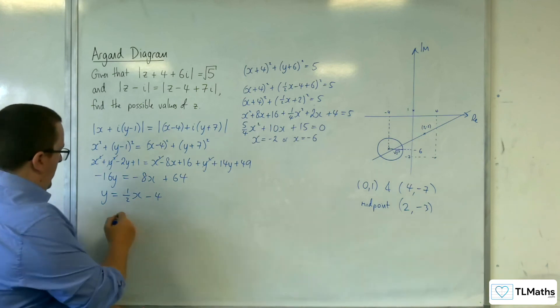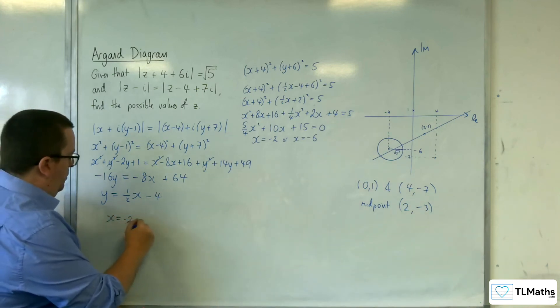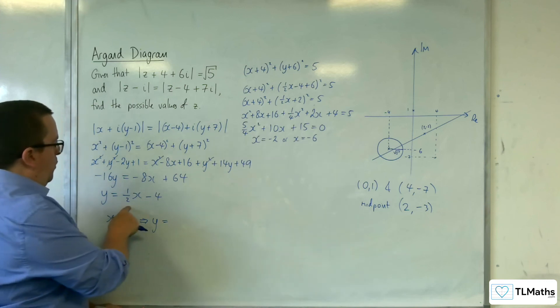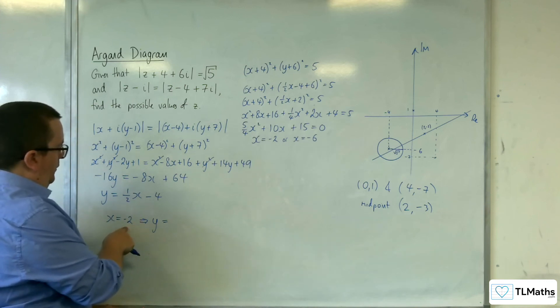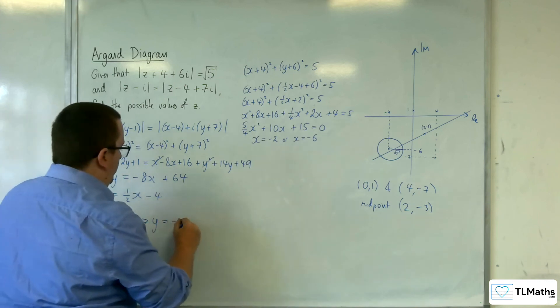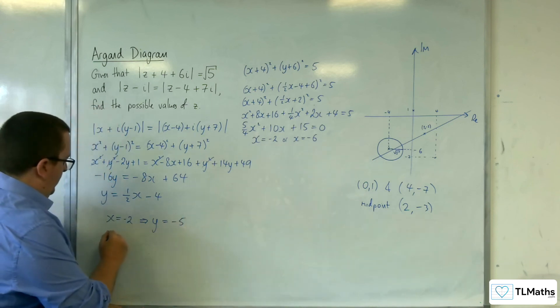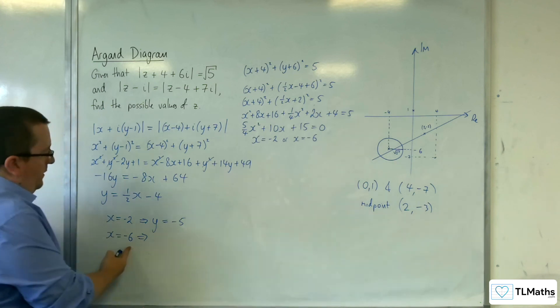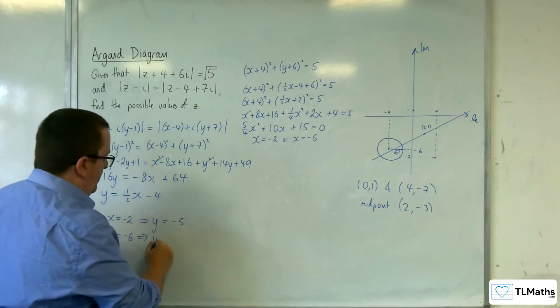So when x equals minus 2, then y is equal to 1 half times minus 2, so minus 1, take away 4, is minus 5. And when x is minus 6, we've got 1 half times minus 6, so minus 3, take away 4, is minus 7.